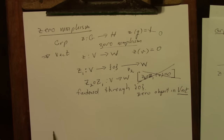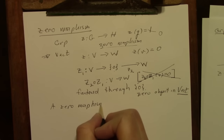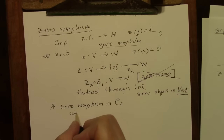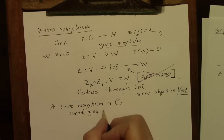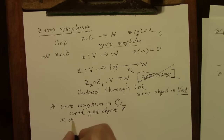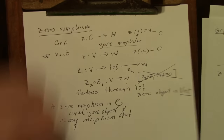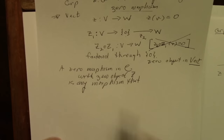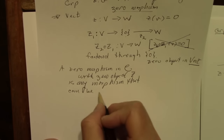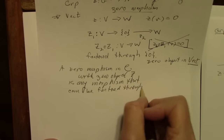So the way to express this zero morphism categorically is that it is the morphism that can be factored through the trivial vector space, and the trivial vector space is the zero object in the category of vector spaces. Now we have a categorical definition: a zero morphism in a category C with a zero object Z is any morphism that can be factored through Z.